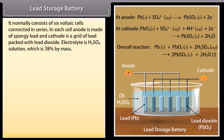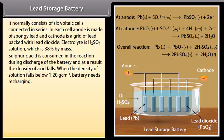Lead Storage Battery. It normally consists of 6 voltaic cells connected in series. In each cell, anode is made of spongy lead and cathode is a grid of lead packed with lead dioxide. Electrolyte is H₂SO₄ solution which is 38% by mass. Sulfuric acid is consumed in the reaction during discharge of the battery, and as a result, the density of acid falls. When the density of solution falls below 1.20 gram per centimeter cubed, battery needs recharging. When electrical energy is supplied to the battery from an external DC source, cell operates like an electrolytic cell and chemical reactions take place, but now the electrode reactions are reversed from those that occur during the discharge of the battery.